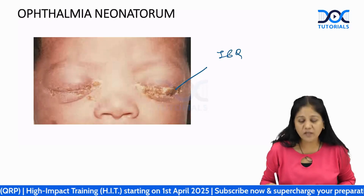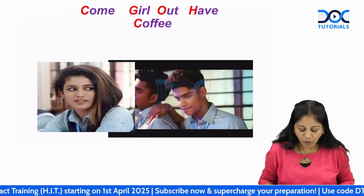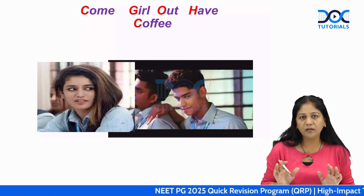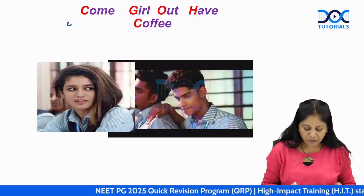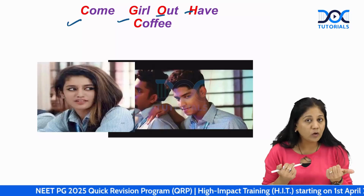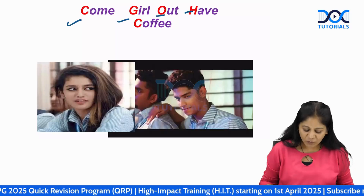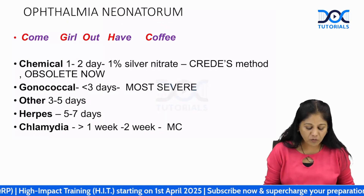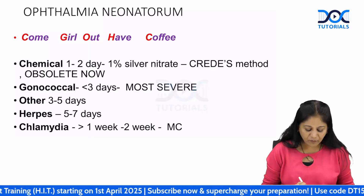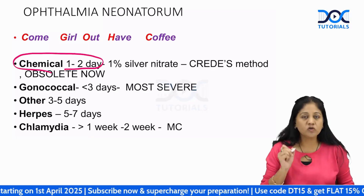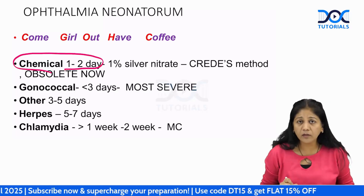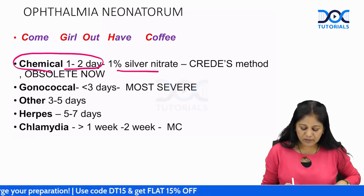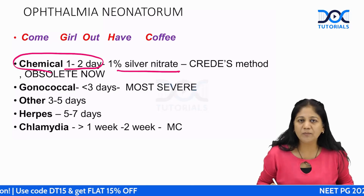Ophthalmia neonatorum is an image-based question. Depending on the time of presentation of watering in the newborn's eye, we divide it into five types using the mnemonic 'Come Girl Out Have Coffee.' If the baby presents on the day of birth with discharge, think of silver nitrate — described by Credé.